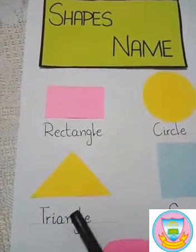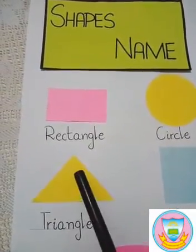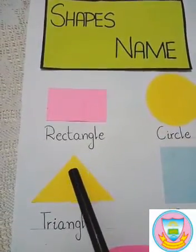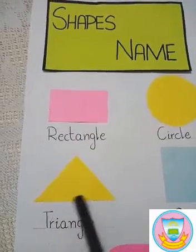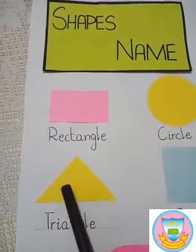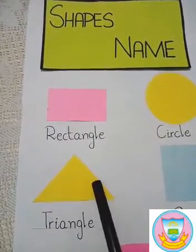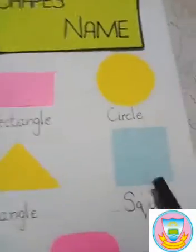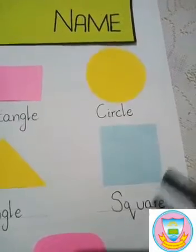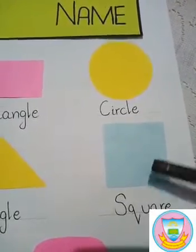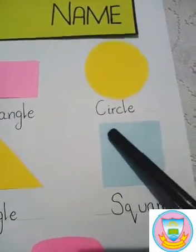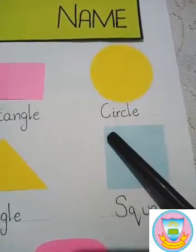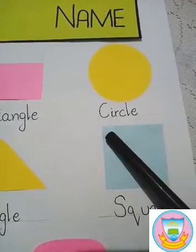Triangle has three sides: one, two, three — and its two sides are equal. Square: square has four equal sides — one side, two side, three side...